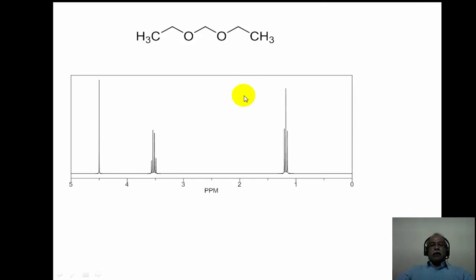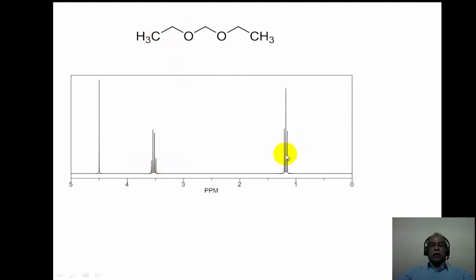Let us see another example. This is a diethyl acetal shown here. The ethyl groups appear as a simple quartet and a triplet in the NMR spectrum, and the methylene group appears as a singlet around 4.5 ppm.